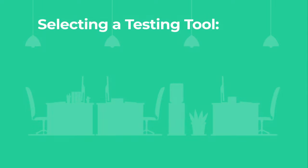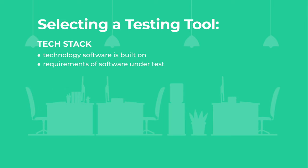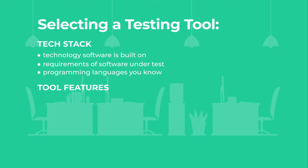After you define the test scope, you'll need to select automation tools. There are three key criteria to keep in mind. Firstly, consider tech stack — the technology the software is built on, requirements of the software under test, and programming languages you know. Secondly, pay attention to the tool features: operating systems, platforms, and environments.